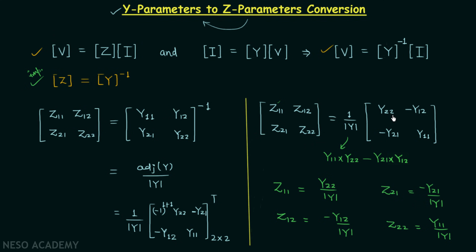To remember this, simply put a negative sign in front of y12 and y21, then replace y11 with y22 and y22 with y11. In this way you will have the required matrix, and then divide by the determinant. I hope the discussion in this lecture was clear to you.